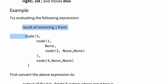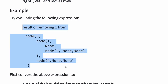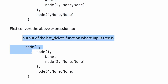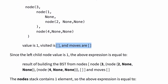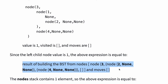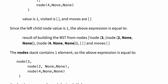For example, let's evaluate the result of removing 1 from the tree with node 3, 1, 2, and 4. First, convert this expression to the output of the BST delete function where input tree is the same tree, value is 1, visited is empty, and moves are empty. Since the left child node value is 1, the above expression equals the result of building the BST from nodes node 3, node 2, and node 4, and moves empty. The node stack contains one element, so this equals node 3 with left child node 2 and right child node 4.